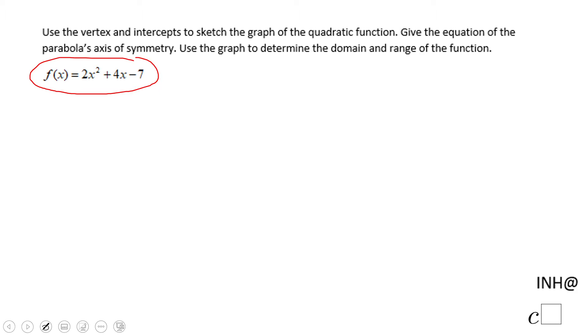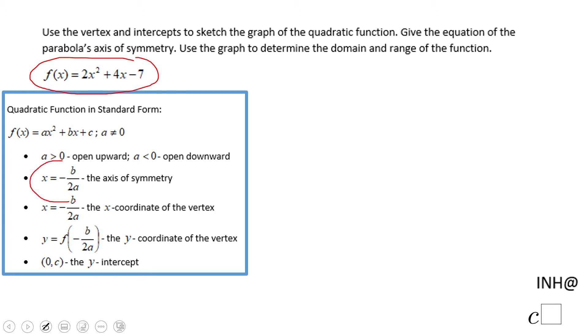For finding the vertex, we're going to need this part: x equals negative b over 2a. In this case, we have negative b is 4 and a is 2, so we end up here with negative 1, because 2 times 2 is 4 and negative 4 over 4 is negative 1.